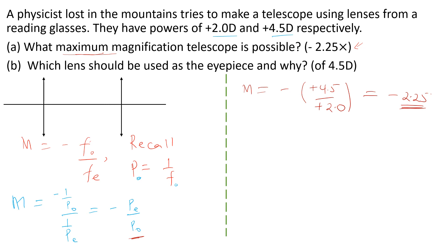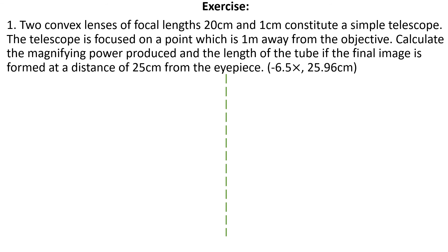For Part B — which lens should be the eyepiece and why? The lens with positive 4.5 D should be the eyepiece, because using it as the eyepiece gives the maximum magnification. We have now covered two cases of the astronomical telescope: normal adjustment where the final image is at infinity and the eye is relaxed, and the case where the final image is formed at the near point.